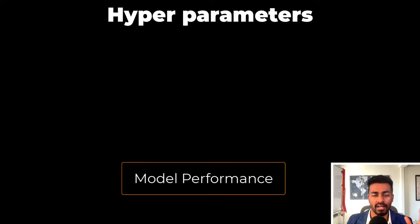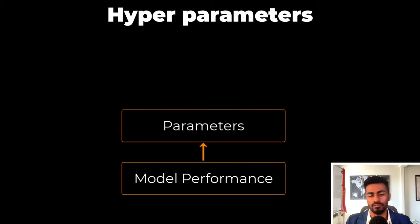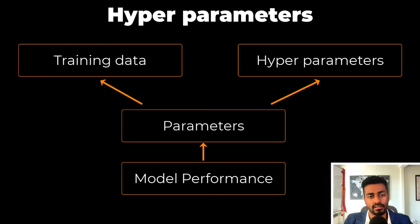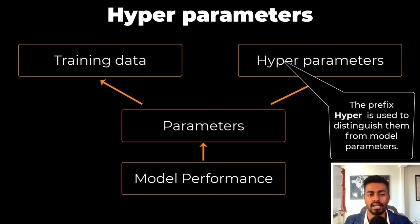The performance of the model depends on the parameters of this model, which are the edge weights, and the parameters are in turn dependent on two things. The first is the data during training of the model, and the second is another set of parameters called hyperparameters. The prefix hyper is used to distinguish them from the model parameters, and it indicates the top level parameters on which the model depends.